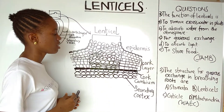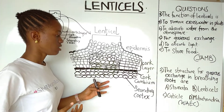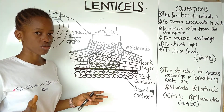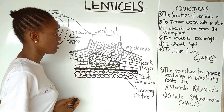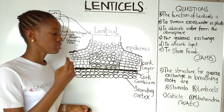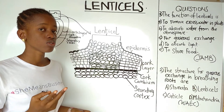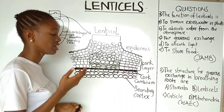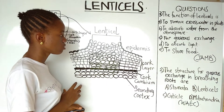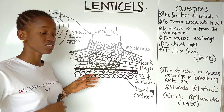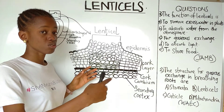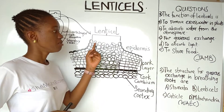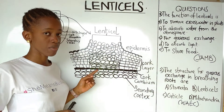What are the gases being exchanged in lenticels? They are CO₂ (carbon dioxide), O₂ (oxygen), and H₂O (water vapor). These gases need to be exchanged between the environment and the plant — that is why the lenticel is present in the stem or root.